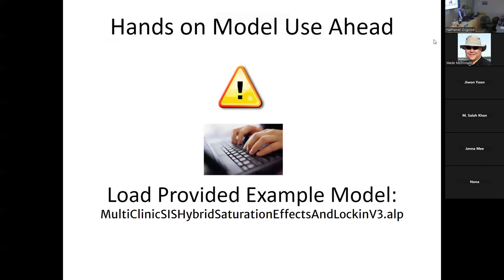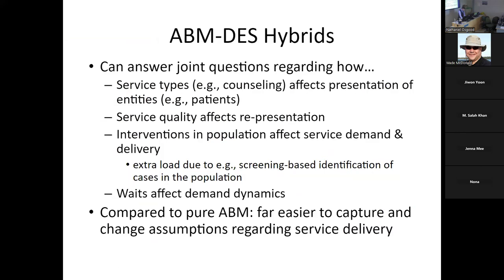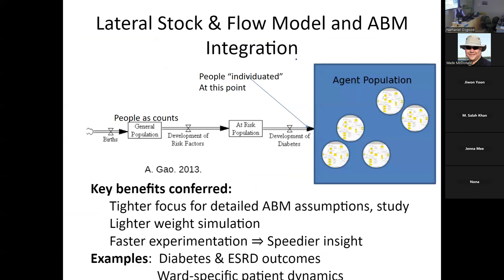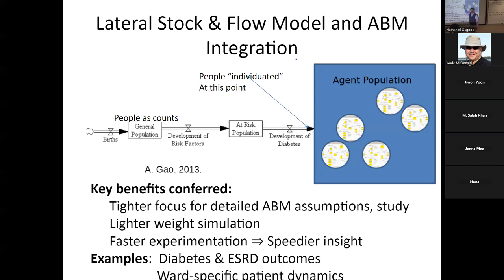The next pattern is rather different but also really powerful. It concerns a situation where we have system dynamics — the language of stocks and flows — in an upstream model. Particularly, I want to draw your attention to situations quite common where we have a general population whose dynamics we want to capture because we're interested in some sub-part of that general population that's a particular focus or risk.